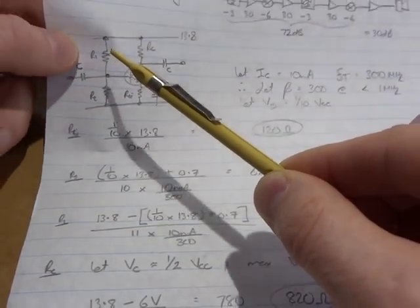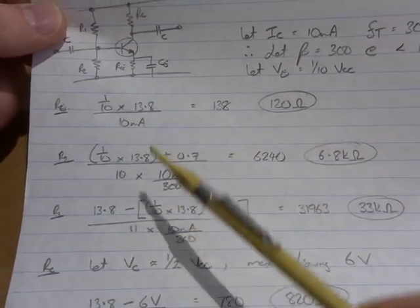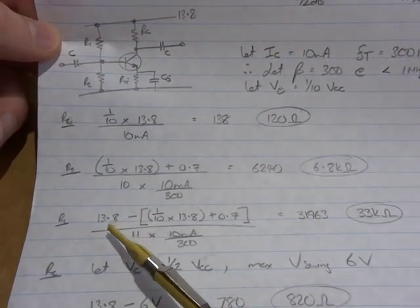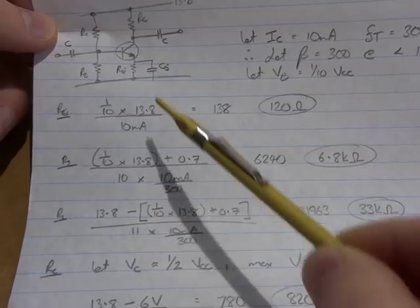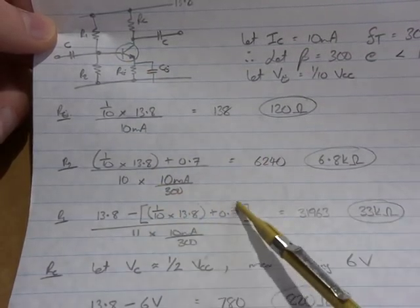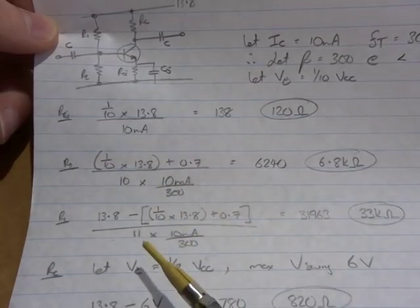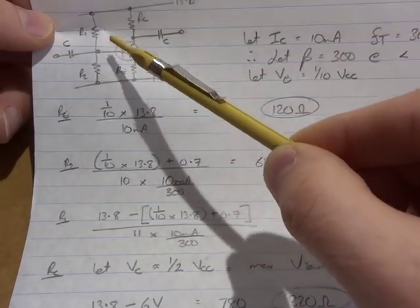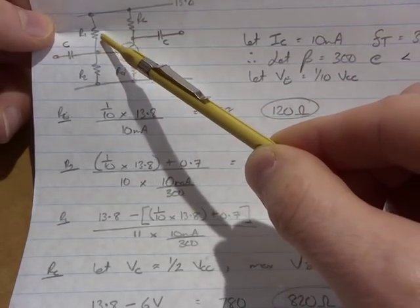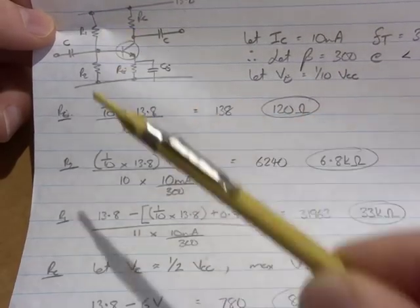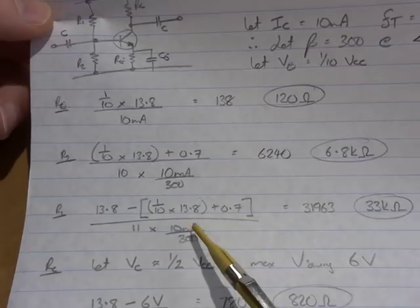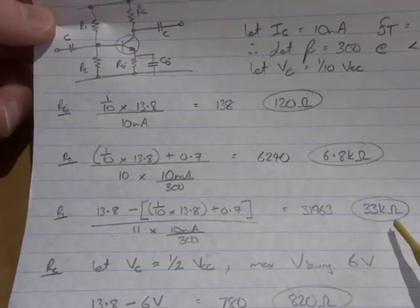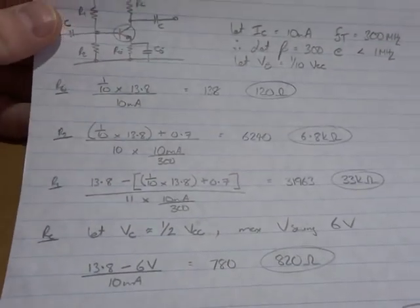R1, which is the upper resistor in that voltage divider biasing, again, just looking from Ohm's law, looking at the voltage drop across that, so it's going to be Vcc minus whatever the voltage was at the base, and in this particular case, we have 10 times current coming out through here, and now we're adding one lot of base current, so it'll be 11 times through here, so hence the 11 times our base current, comes out at 31.9k, so I'll use 33k.